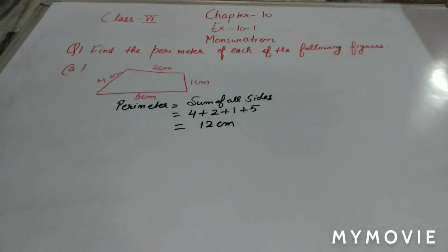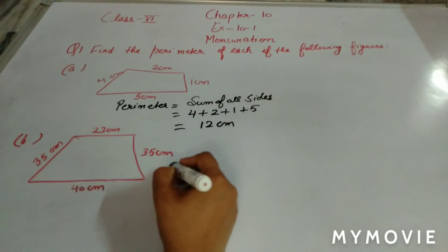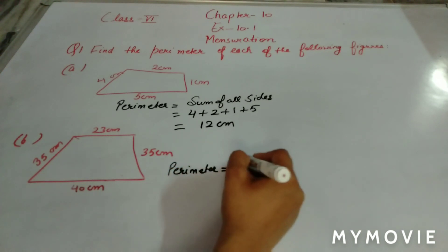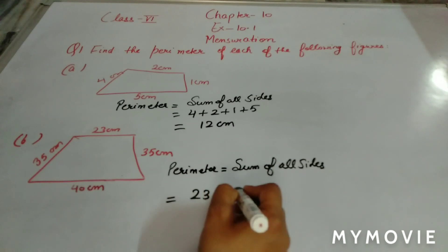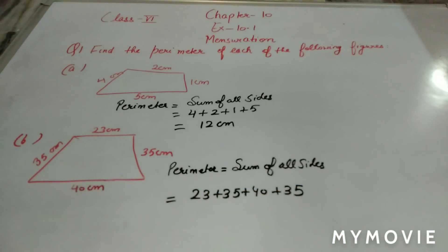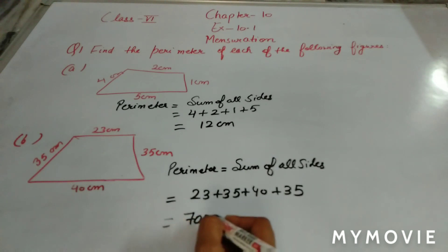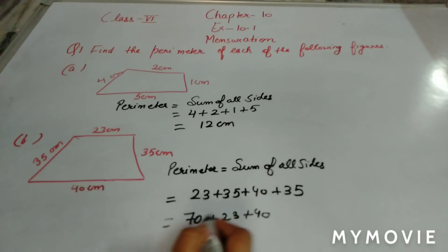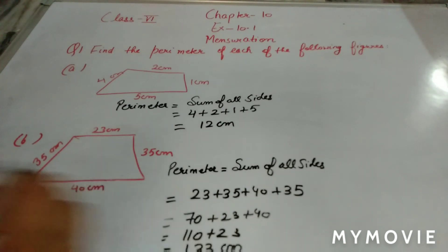Now we move on to the second part. We find its perimeter the same way — sum of all sides — that means 23 plus 35 plus 40 plus 35. To make calculation easy, add 35 and 35 first to get 70, then 70 plus 40 is 110, and 110 plus 23 is 133 cm.